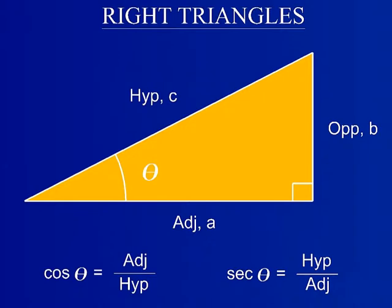The second set of functions is the cosine function and its reciprocal, the secant function. Like the sine function, the cosine function is a ratio of lengths. It is a ratio of the length adjacent to the angle of interest, a, over the hypotenuse, rather than the length opposite.